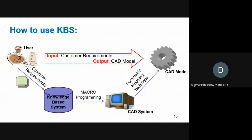For example, if you want to generate a gear, you just give the input to the system — the module, the load, the RPM. Based on that information, the system will develop what should be the actual gear for the purpose. This system can be used not only by laymen but also by experts.